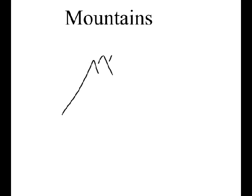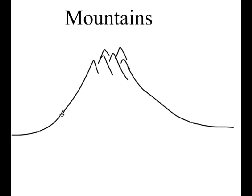An example of that — let's say here's some pretty mountains, oh those are nice mountains, big mountains. There's a nice mountain chain. Let's look at what happens to the wind as it blows over this mountain chain.